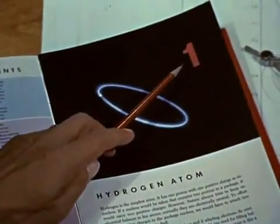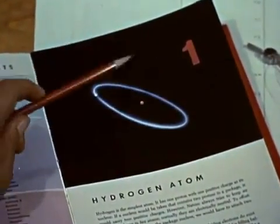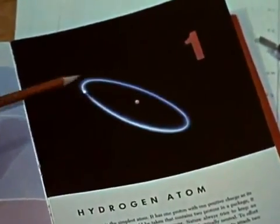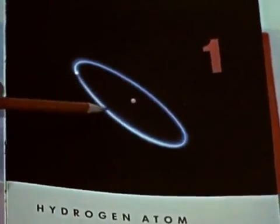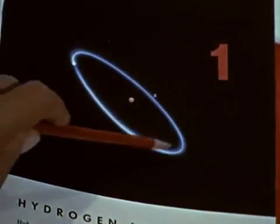Let's start with number one, the simplest atom in nature. One proton and one electron give us the element hydrogen, a very light gas.